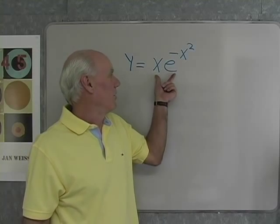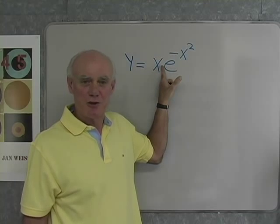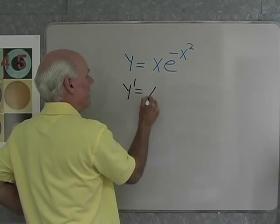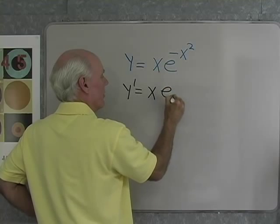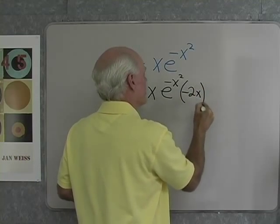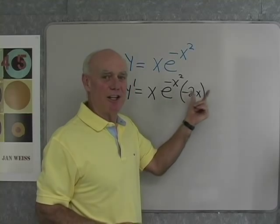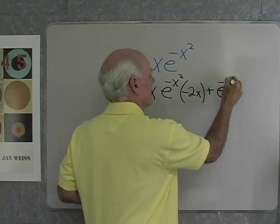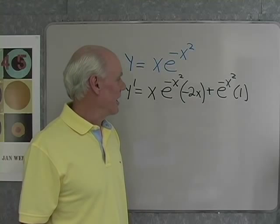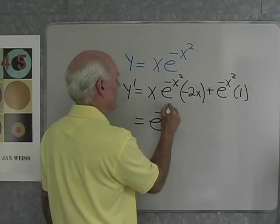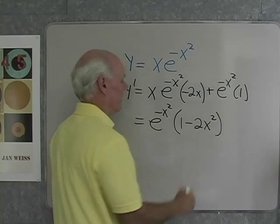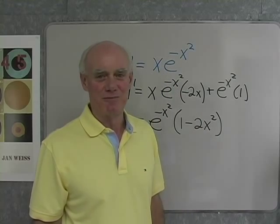Next: y equals x times e to the negative x squared. I use the product rule first: y' equals x times the derivative of e to the negative x squared, which is e to the negative x squared times negative 2x, plus e to the negative x squared times the derivative of x, which is 1. Factoring out e to the negative x squared gives e to the negative x squared times 1 minus 2x squared. Product rule first, then the chain rule in the middle.